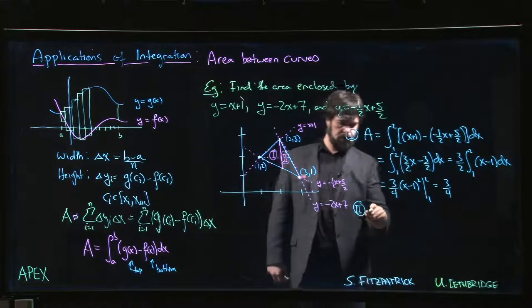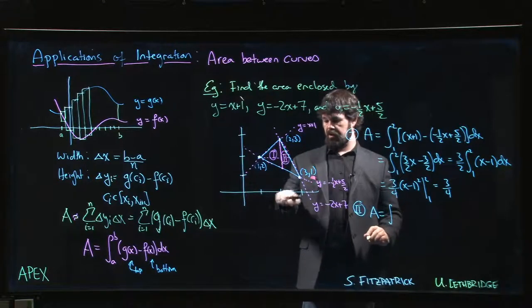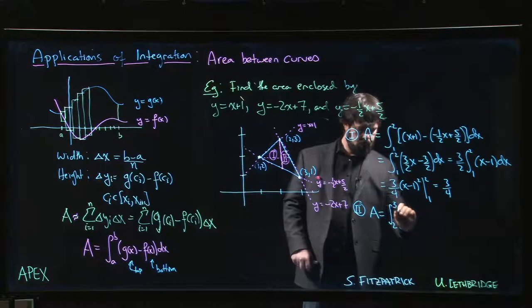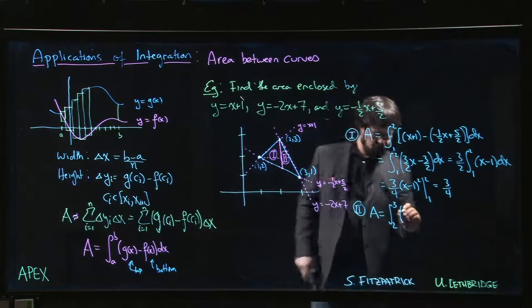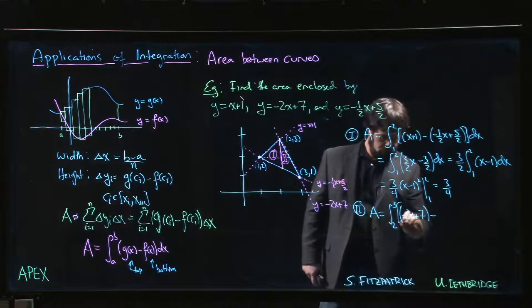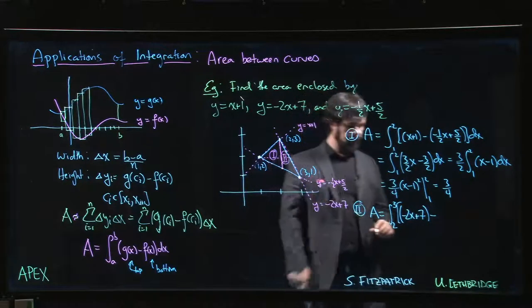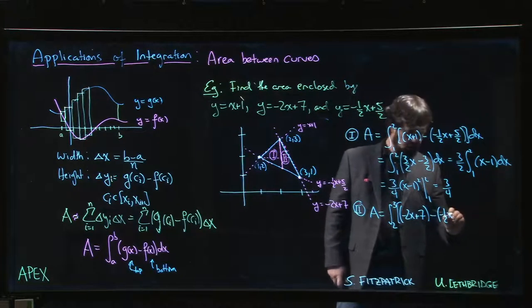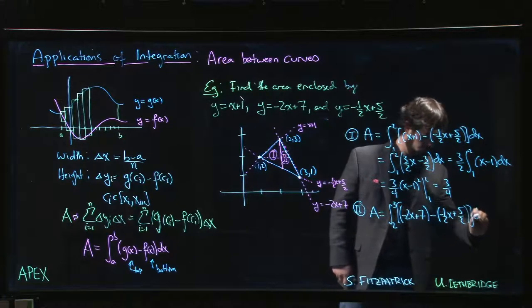Second region. X is going to start at 2 and end at 3. Upper curve is now this one, minus 2x plus 7. Lower curve is still this line, minus 1 half x plus 5 over 2.